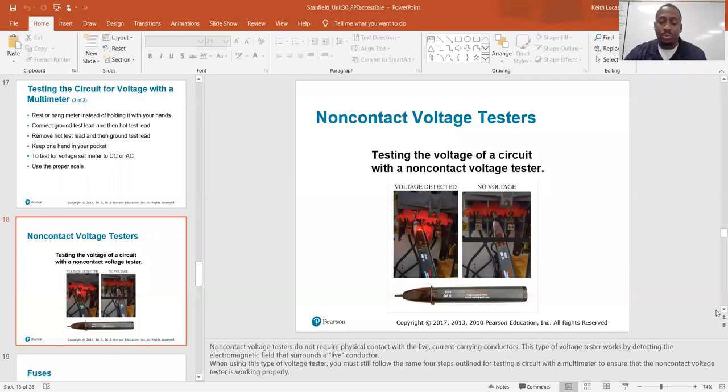When using this type of voltage tester, you must still follow the same four steps outlined for testing a circuit with a multimeter to ensure that the non-contact voltage tester is working properly. Sometimes you want to test your tester. If it beeps when you put it up to the source, if you want to confirm that, you can pull out an actual multimeter and test the same source for power.